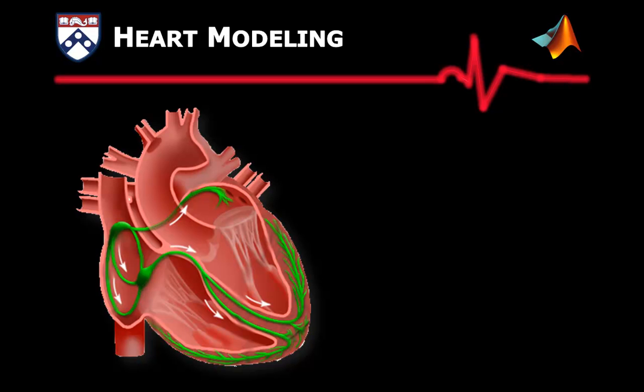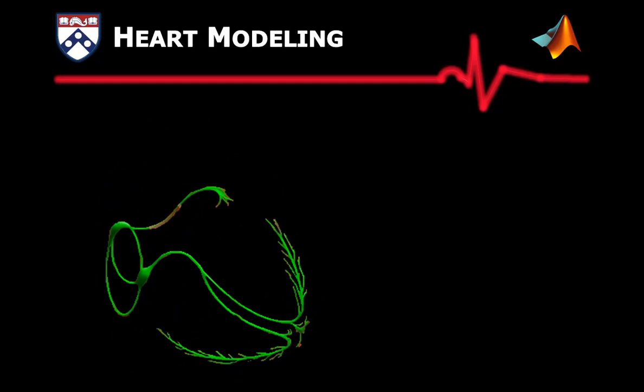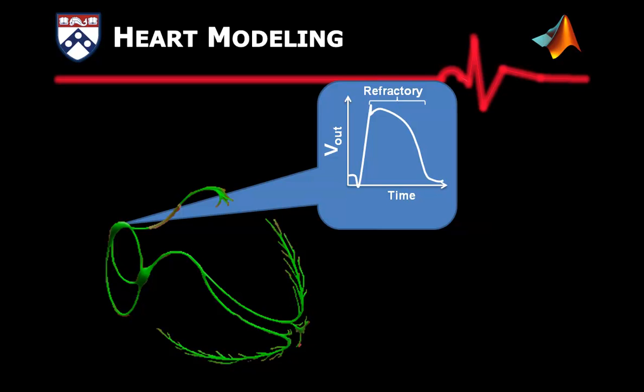The coordinated heart contractions are governed by the electrical conduction system of the heart. When a heart muscle is activated by an external electrical impulse, the muscle will contract. The electrical voltage outside the muscle changes over time, which is referred to as the action potential.